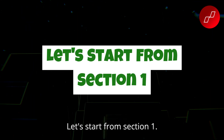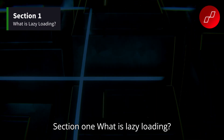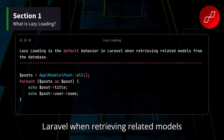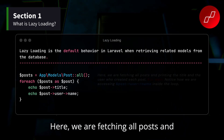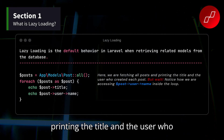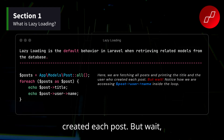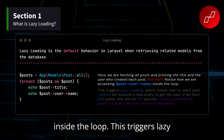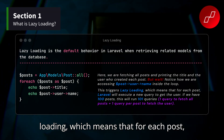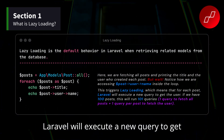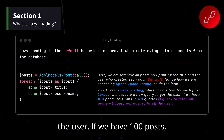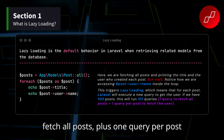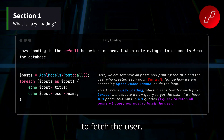Section one: What is lazy loading? Lazy loading is the default behavior in Laravel when retrieving related models from the database. Here, we are fetching all posts and printing the title and the user who created each post. Notice how we are accessing post username inside the loop — this triggers lazy loading, which means that for each post, Laravel will execute a new query to get the user. If we have 100 posts, this will run 101 queries: one query to fetch all posts, plus one query per post to fetch the user.